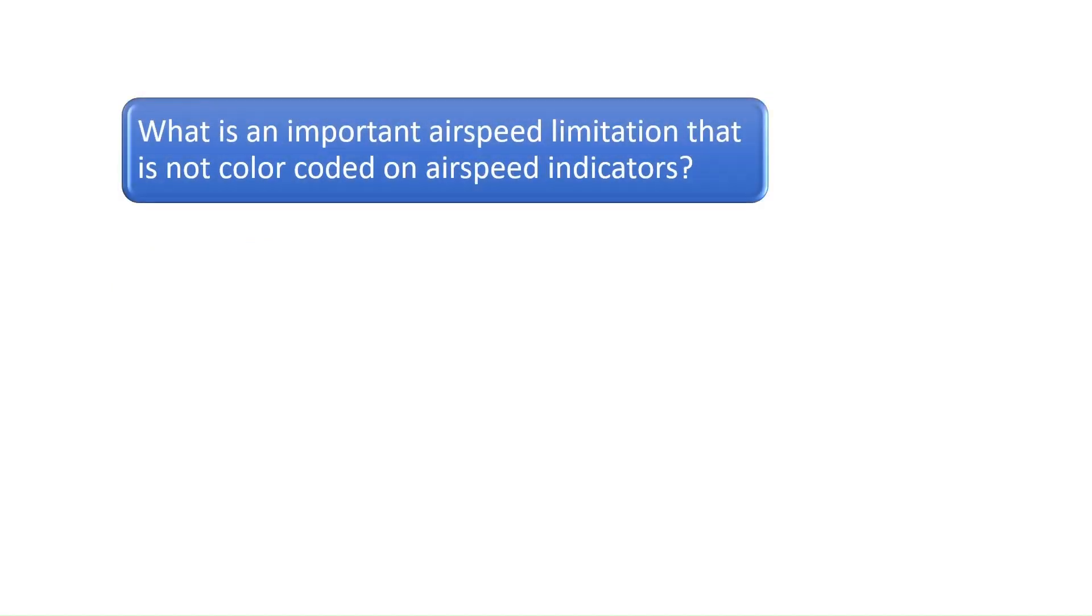Question 9. What is an important airspeed limitation that is not color-coded on airspeed indicators? Maneuvering speed is the maximum speed for abrupt maneuvers and is sometimes called the rough airspeed. Maneuvering speed is not color-coded on an airspeed indicator. The correct answer is A.